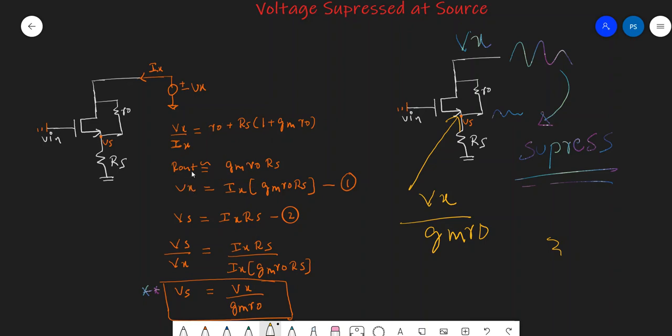So what is R_out? It is g_m times R_O times R_S. What is V_x? By the same formula, V_x must be I_x times this term. V_x by I_x is my R_out, so V_x will be equal to I_x times g_m times R_O times R_S. Let this be equation 1.